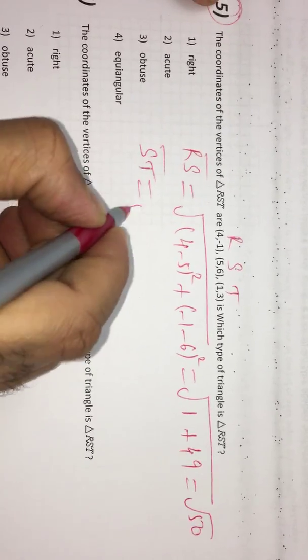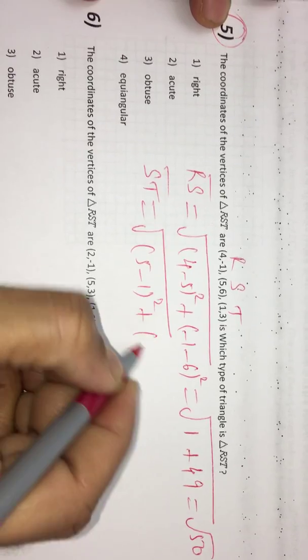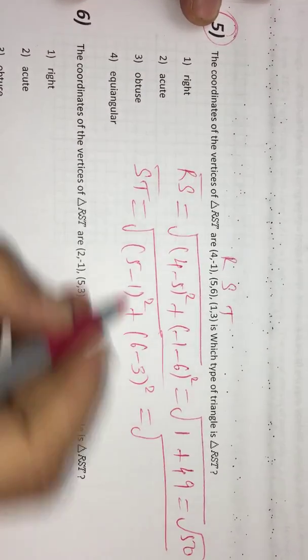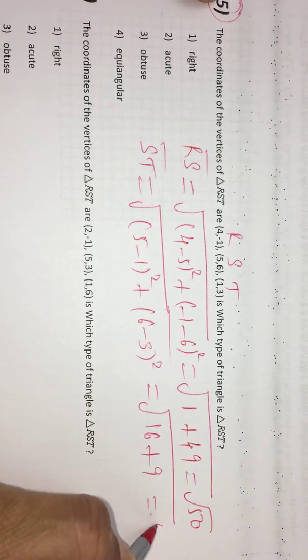In the same way, ST is using distance formula: 5 minus 1 whole square, 6 minus 3 whole square. Then you get 16 and 9, which is root 25, that is 5.